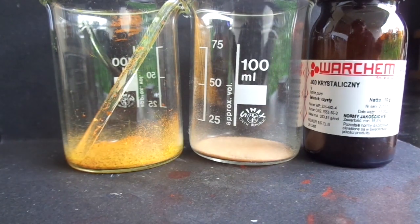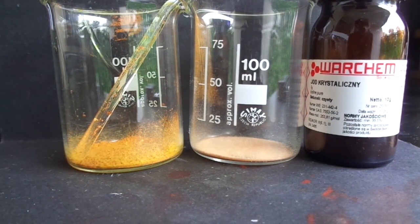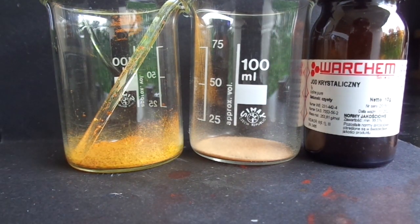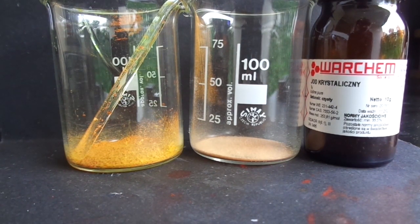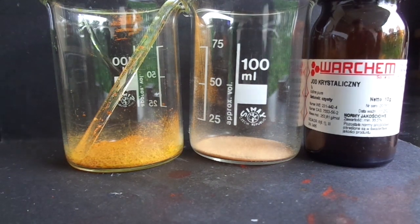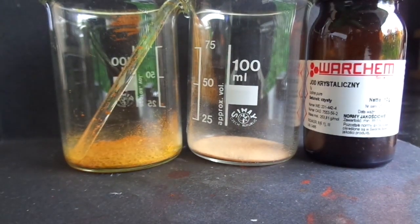Erythrosine is tetraiodofluorescein. You can see how I made fluorescein in the previous video. The erythrosine is used as a food additive, as coloring, and we are going to make it from iodine, sodium bicarbonate, and some fluorescein.